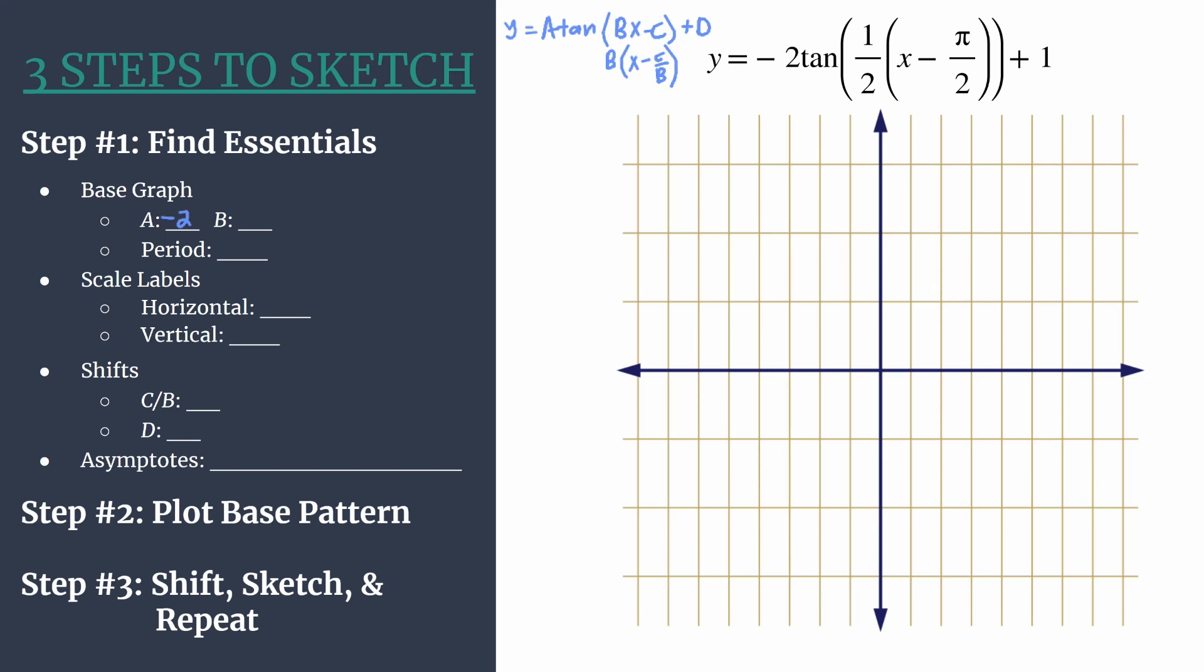It'll be vertically stretched out by a factor of 2. And then that negative tells us it will be vertically reflected from the original graph of y equals tangent x. So I like to go ahead and make a little star here that just notes, hey, this is going to be flipped from the parent graph.